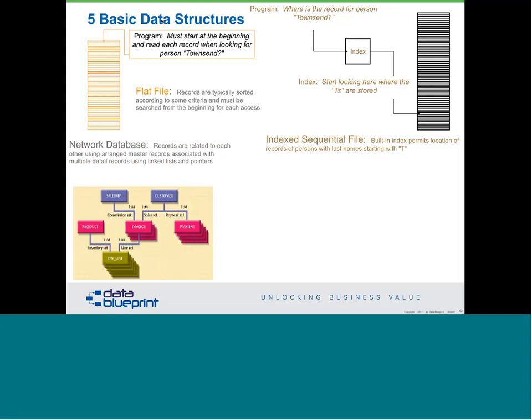The next data structure is a network database — very efficient because they allow you to put linked lists together. A good way to conceptualize this: my checking account might have a balance, but the actual checks associated with it — I can write one check a month or 200 — the bank doesn't care, as long as I've got money in the account. This becomes a very efficient way of processing. What you're seeing is a one-to-many type relationship. A hierarchical database is almost a subset of the network database — it links all data structures to having parents and children. Something has a parent, something has a child, and you work within it that way.